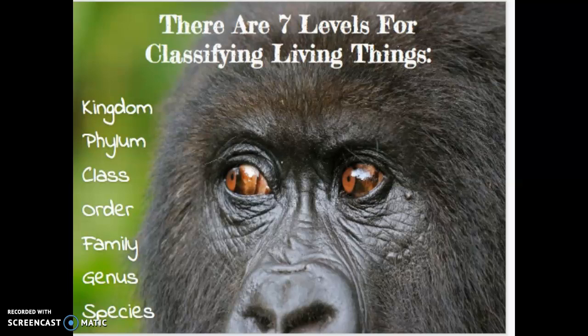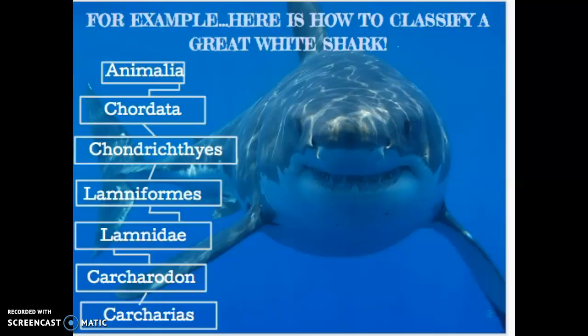Now let's look at an example of a rather surprising animal in the depths of the ocean. Here's how to classify a great white shark. Can you guess what the genus and species are for the great white shark? It's Carcharodon carcharias. It's alright if you don't know the answer, but we'll talk more about genus and species later in the show.